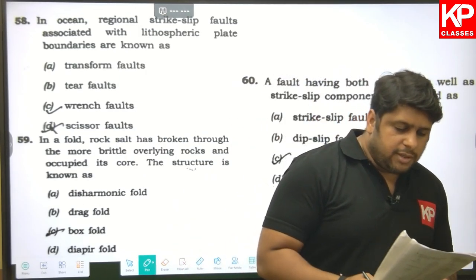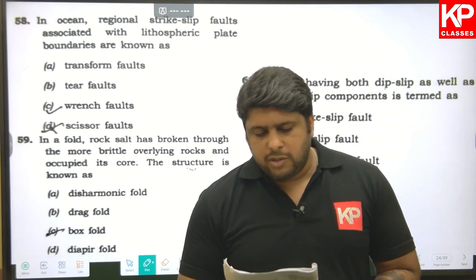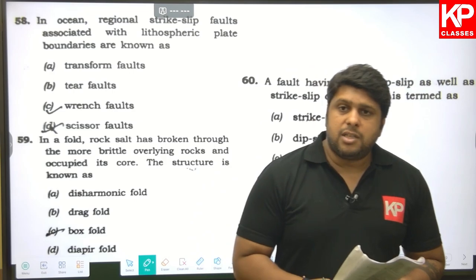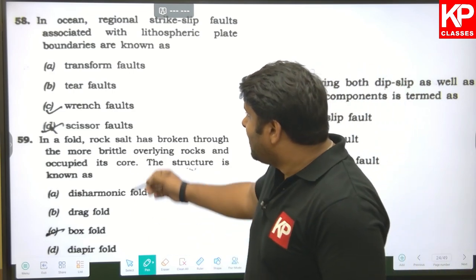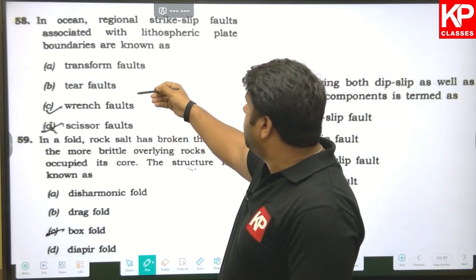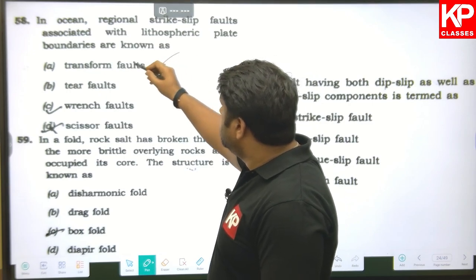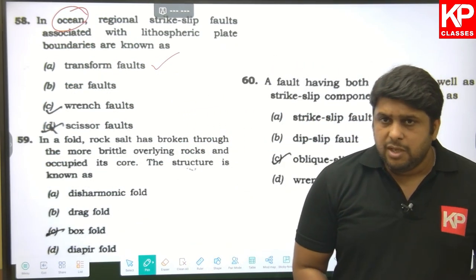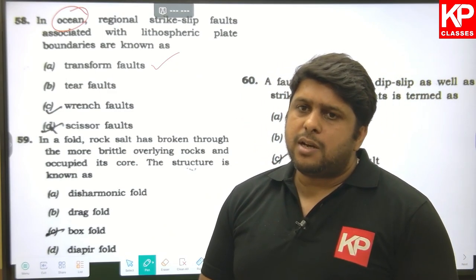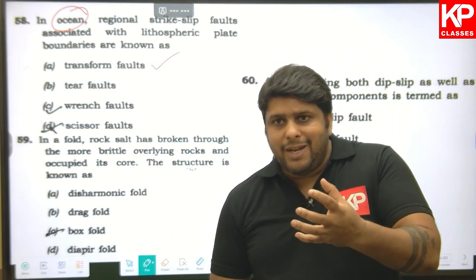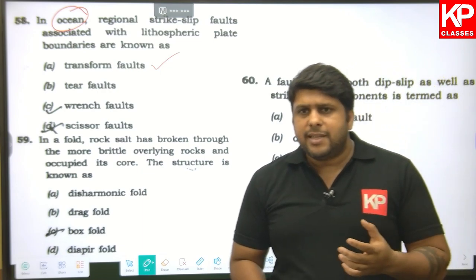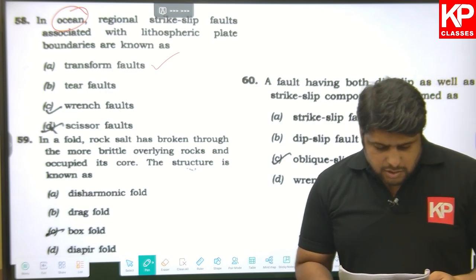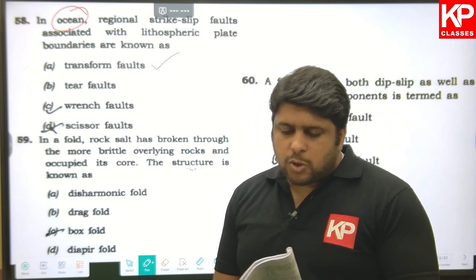Question fifty-seven: the hinge line of a fold is defined as the line of maximum curvature in a folded bed, so C is the right answer. Question fifty-eight: in oceans, regional strike-slip faults associated with lithospheric plate boundaries are known as transform faults. Wrench faults and tear faults are also strike-slip, but the question specifically asks about ocean plate boundaries, so transform faults is the correct answer.